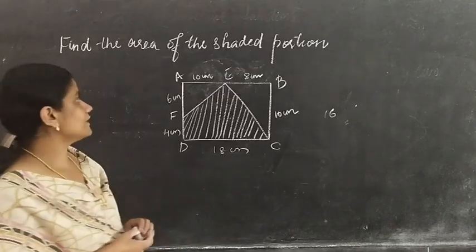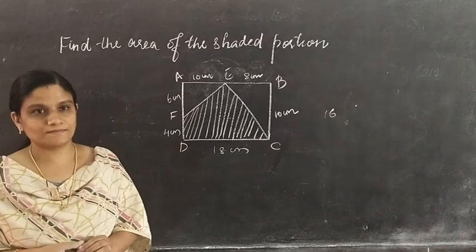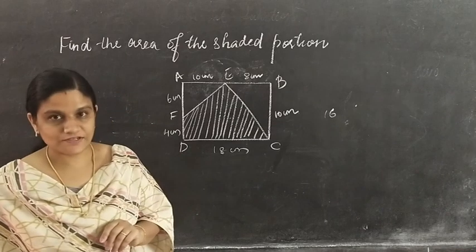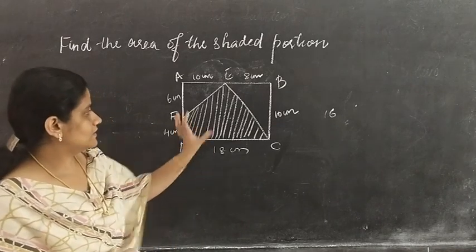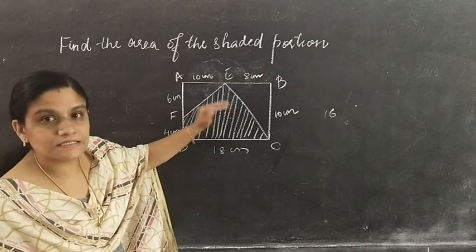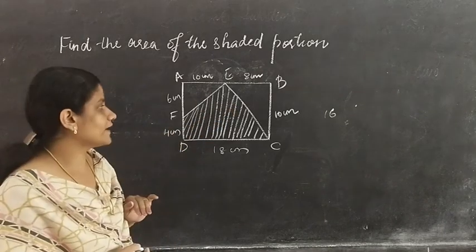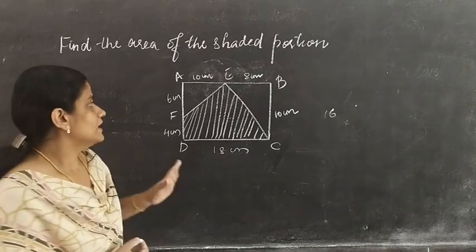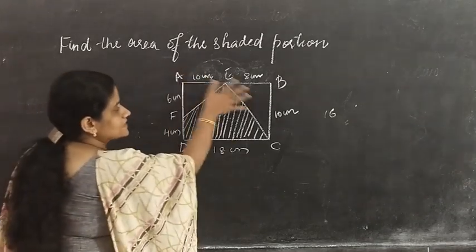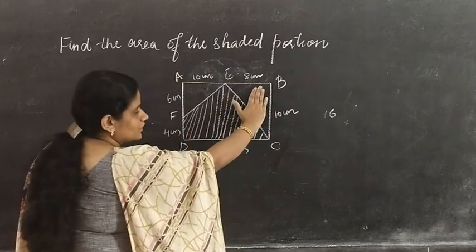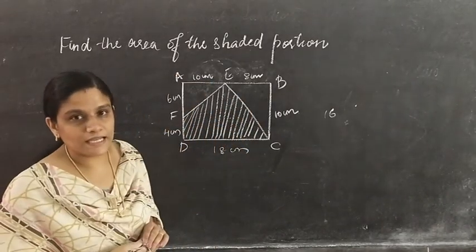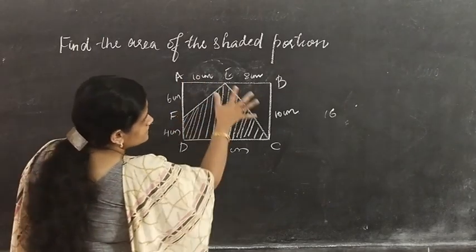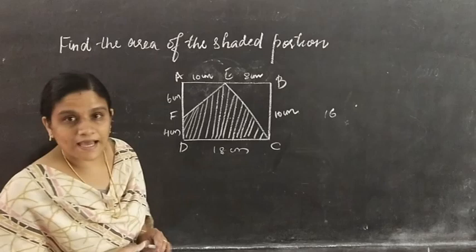Moving to the next question: find the area of the shaded portion. ABCD is a rectangle and a part is shaded. We have to find the area of this shaded portion. From the complete area, if we subtract the two triangles AEF and EBC, we can find the area of the shaded portion. Two right angle triangles are there.